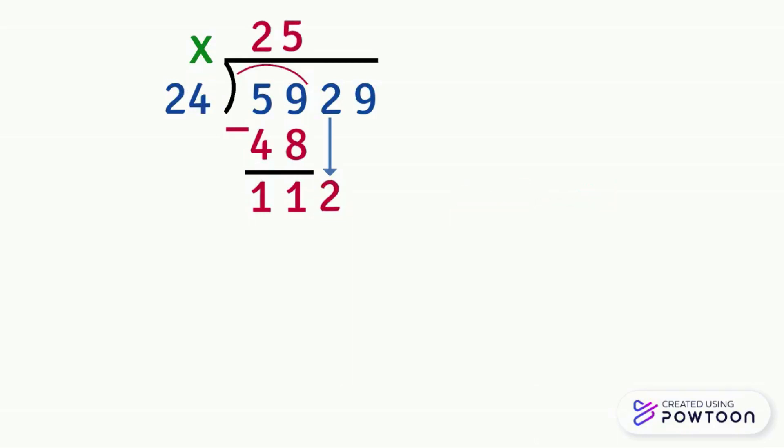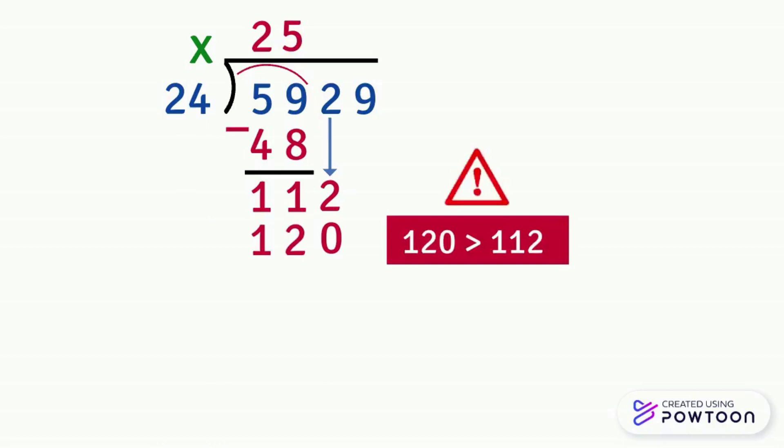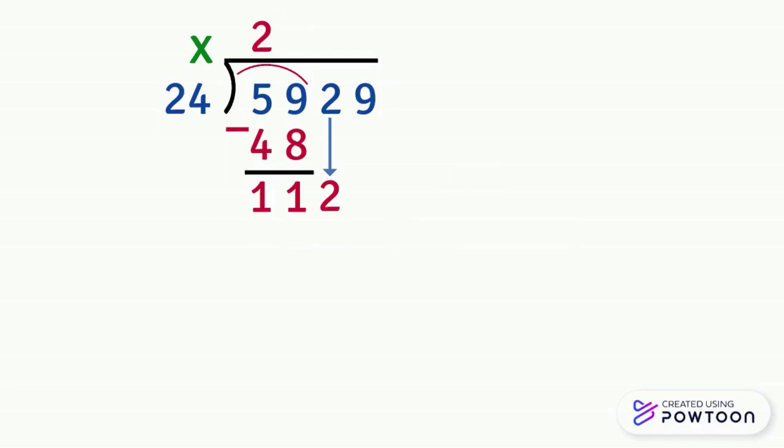So let's multiply 24 by 5. 5 times 4 equals 20. We write 0 and we carry 2. 5 times 2 equals 10 then add the carry which is 2 which makes 12. So 24 times 5 equals 120. But be cautious, the number 120 is greater than 112 so here we cannot multiply 24 by 5. So we're going to erase 120 and we should take the number that comes just before 5 which is 4.